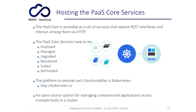The PaaS services are being developed as a suite of microservices — small pieces of software that interact among themselves with lightweight protocols like HTTP and REST APIs. These microservices need to be deployed, managed, upgraded, monitored, scaled, and self-healed. All these features are provided by Kubernetes, an open-source system for managing Dockerized applications across multiple hosts in a cluster, which is the right platform to host our PaaS core services.